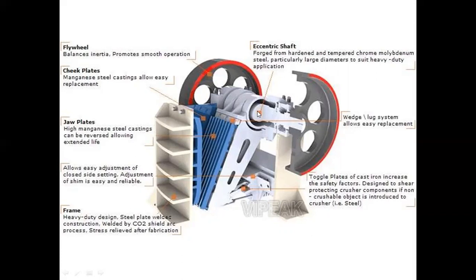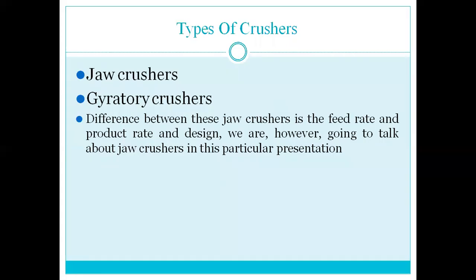The electric shaft is forged from hardened and tempered chrome molybdenum steel, particularly with large diameters for heavy duty applications. The types of crushers we have are jaw crushers and gyratory crushers. The main difference between these two is the feed rate — the input material rate varies between jaw crushers and gyratory crushers, as does the product rate and design.